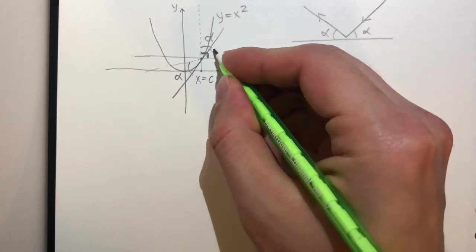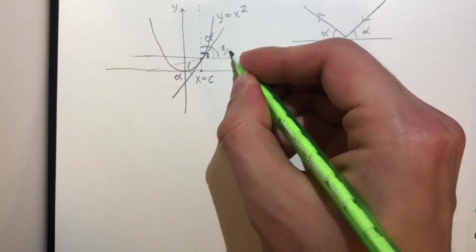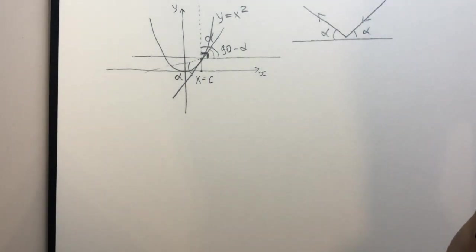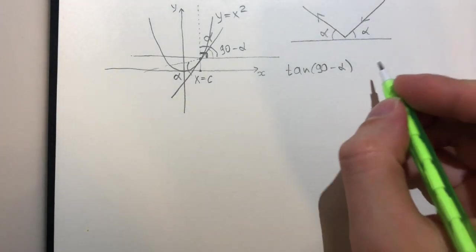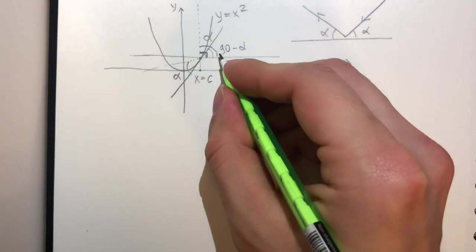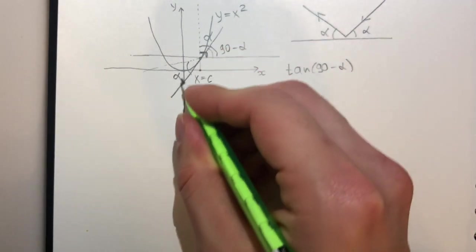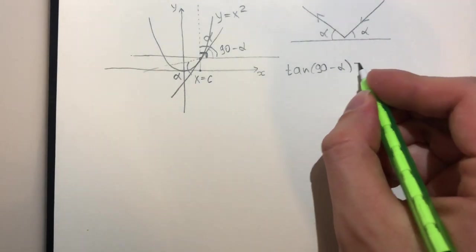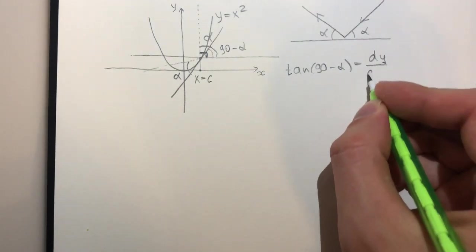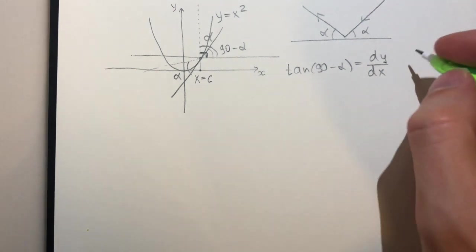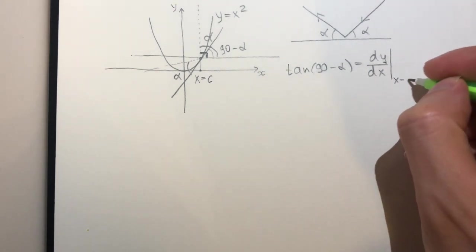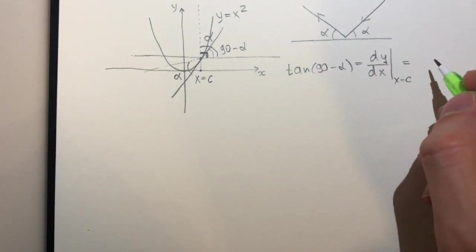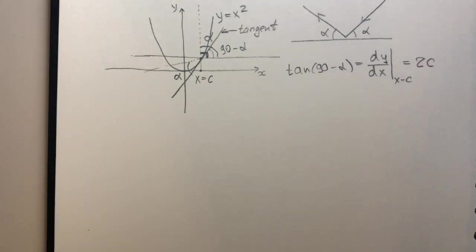So this angle becomes 90 minus alpha. As we all know, tangent of this angle is the same as the slope, but the slope is equal to the derivative evaluated at this point. So it is equal to 2c.